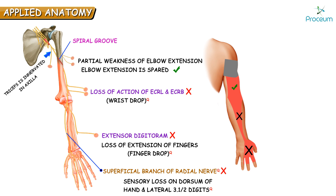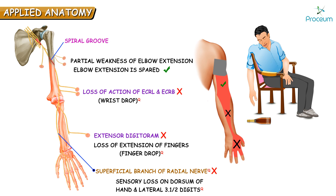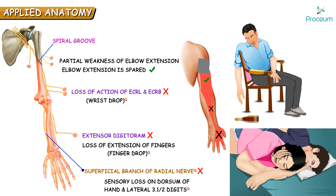Damage to the radial nerve at the spiral groove is seen in Saturday night palsy or honeymoon palsy. Saturday night palsy results from compression of the radial nerve at the mid-arm level near the spiral groove, which occurs when a person falls into deep sleep with their arm hanging over the armrest of a chair, as in alcohol intoxication — typically on a Saturday night. Honeymoon palsy refers to radial nerve compression caused by the pressure of a partner's head during sleep.